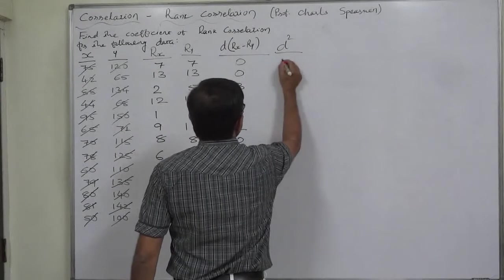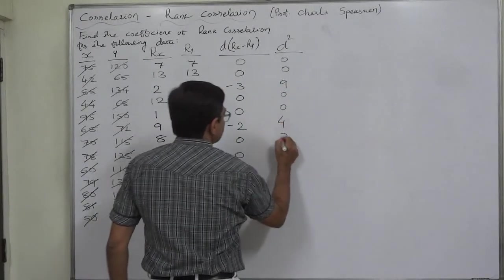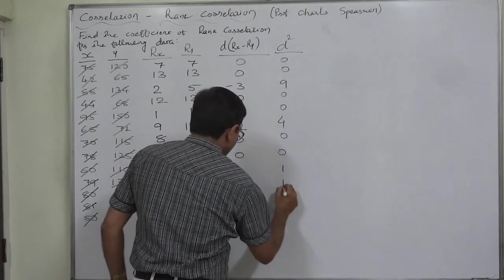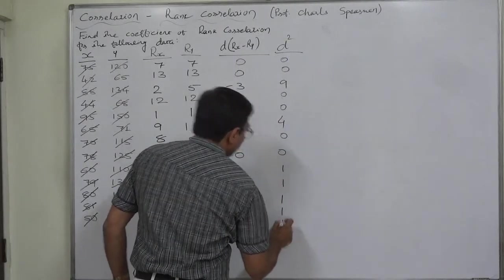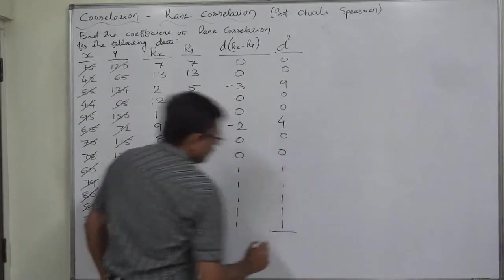And the squared values, D square. 0, 0, 9, 0, 0, 4, 0, 0, 1, 1, 1, 1, and 1. 1, 2, 3, 4, 5, 6, 7, 8, 9, 10, 11, 12, 13. Okay.